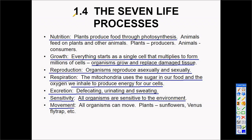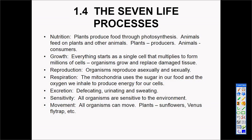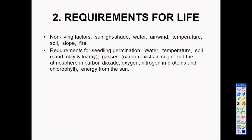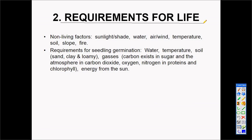Lastly, all animals and plants can move. Plants are limited in their movement, but animals can move around freely. These are the seven life processes that living organisms have. Non-living factors are what living organisms are dependent upon.